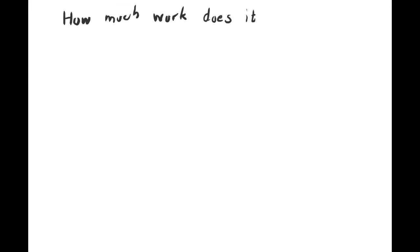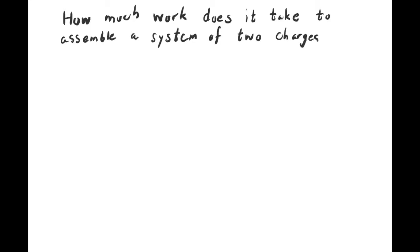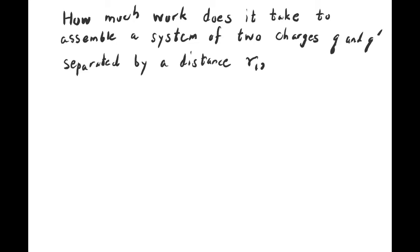That ends our review so far. Let's go a little further and ask some new questions. How much work — some of this is review, some is new — does it take to assemble a system? In this case, the system will be extremely simple: two point charges, q and q prime, and we're going to separate them by a distance. For reasons that will become clearer shortly, we introduce the notation r sub 1,2. Here is q, the source charge, and q prime, the test charge, separated by distance r sub 1,2.